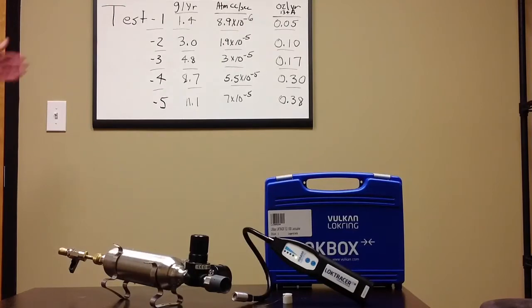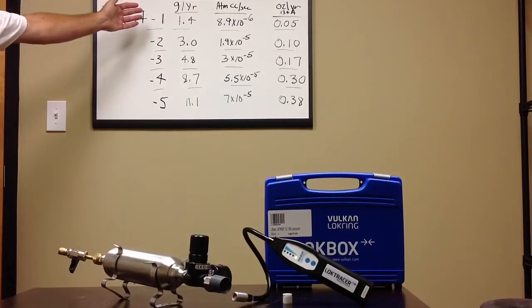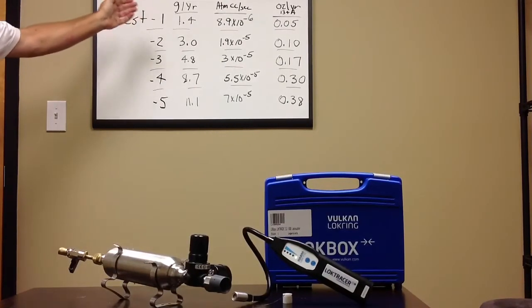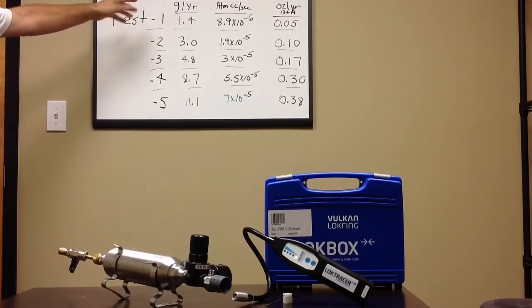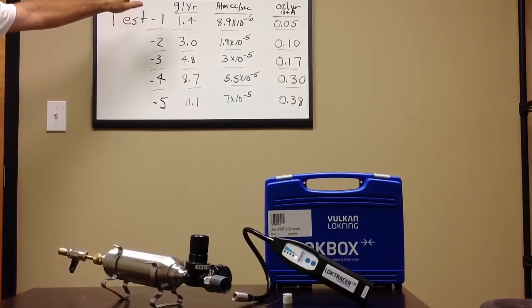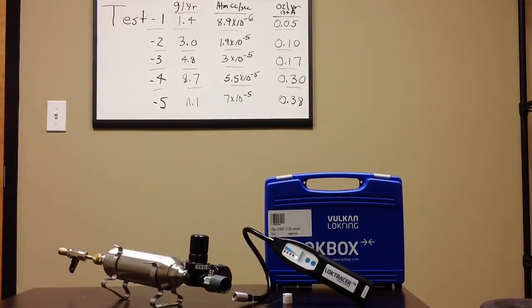These are going to be my test points that I'll adjust the leak to. I've got five different test points. I've got three different types of measurement units: grams per year, atmospheric cc's per second, which is a helium equivalency, and ounces per year of R134A.